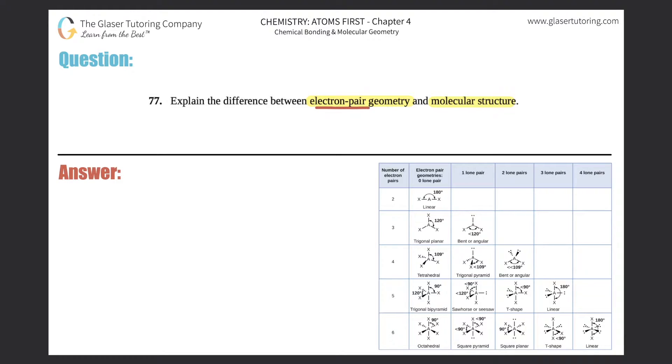Electron pair geometry talks about a molecule's total things around the central atom. And what are those things? Well, there's only two things that can basically surround a central atom.